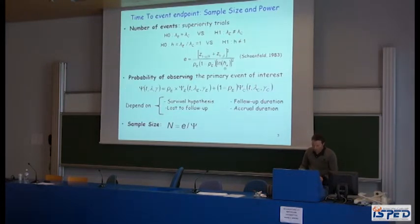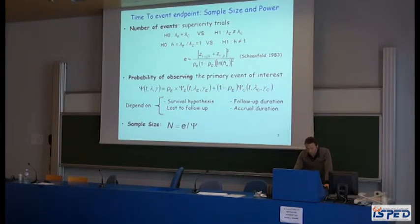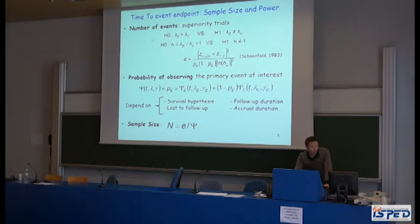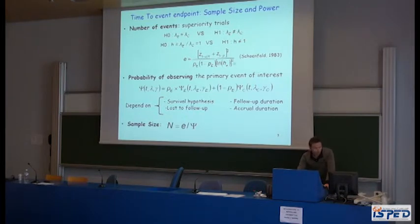We now determine sample size for time-to-event endpoints. In a superiority trial, the statistical analysis consists of a two-sided test. The null hypothesis is equality of the survival functions, which implies a hazard ratio equal to 1. Three quantities need to be determined: first, the number of events; second, the probability of observing the primary event of interest; and finally, the sample size. The formula proposed by Schoenfeld allows us to find the number of events required to detect a predefined effect under the alternative hypothesis using the log-rank test.